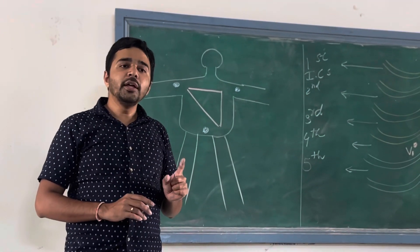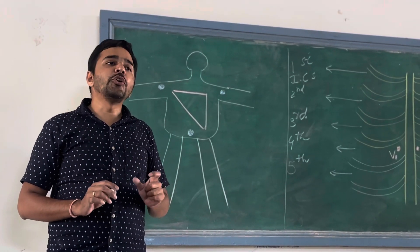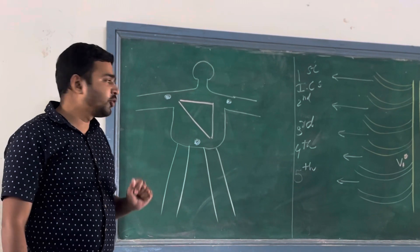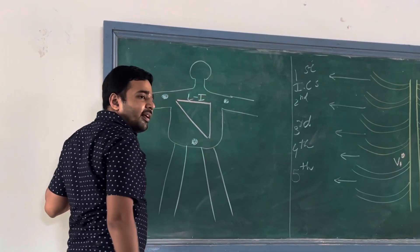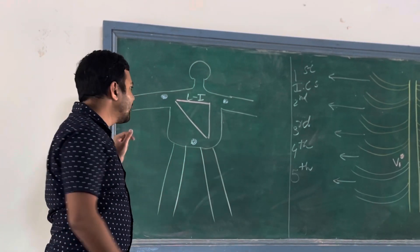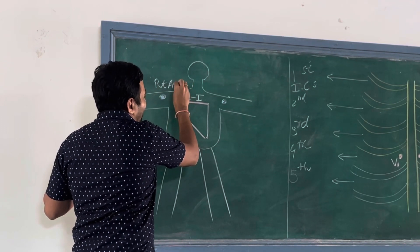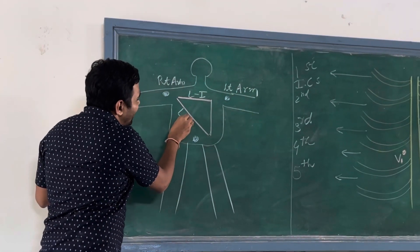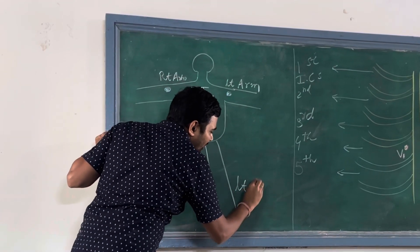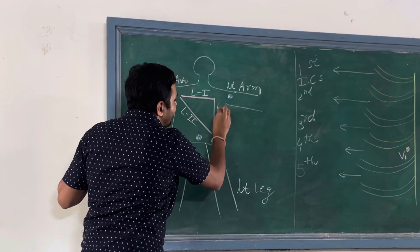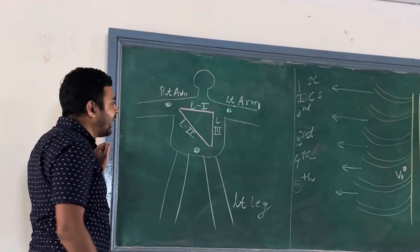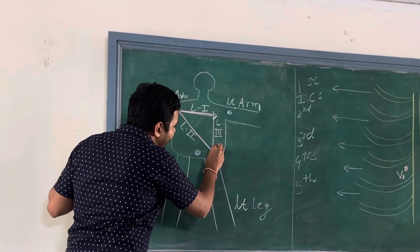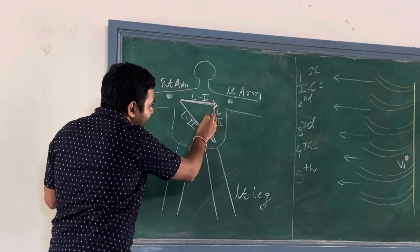Quick revision: First, bipolar limb leads were introduced by Einthoven — Einthoven's triangle. Lead 1 is generated by connecting right arm and left arm. Lead 2 by right arm and left leg. Lead 3 by left arm and left leg. The vectors: Lead 1 is horizontal, Lead 2 is diagonal, and Lead 3 is slightly angled.